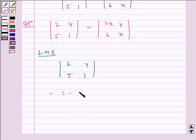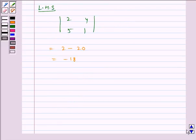Now consider the determinant on the right hand side, that is |2x 4; 6 x|.